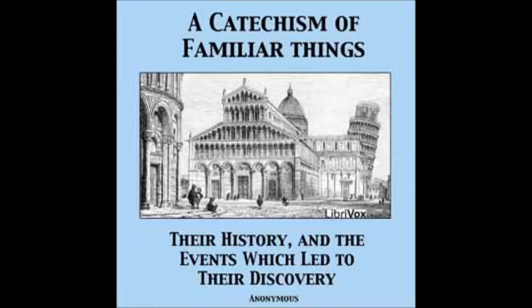What probably gave the first idea of navigation? Accident most likely showed that wood always floats, and on the fallen trunk of a tree, perhaps, someone ventured beyond his depth away from the land. The trunk of a tree hollowed out, for a more convenient position of the body, formed the canoe, usually found among uncivilized nations to this day. From this rude beginning, at great intervals of time, and a slow pace of improvement, the art has at length arrived at its present state of advancement.